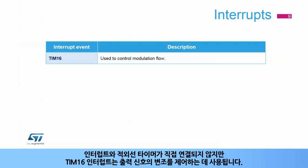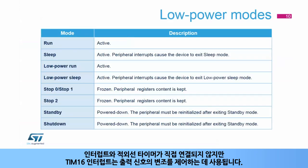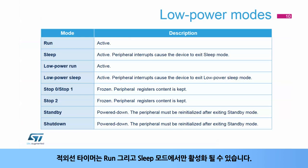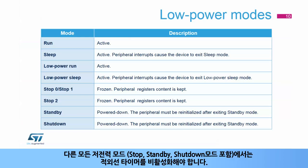No interrupt is associated directly with the infrared timer. However, the timer 16 interrupt is used to control the modulation of the output signal. The infrared timer can be active only in run and sleep modes. In all other low power modes, including stop, standby, and shutdown modes, the infrared timer must be disabled.